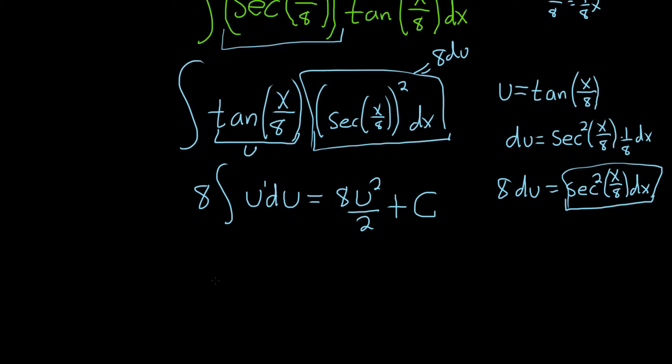Last thing to do is maybe simplify. So 8 over 2 is 4. And then u was the tangent of x over 8. So I'll write it like this: tangent of x over 8. And the whole thing here is squared. And then we still have our capital C. And that would be the final answer.